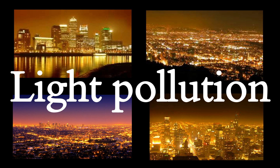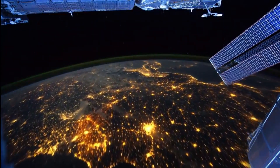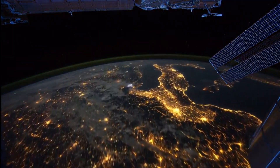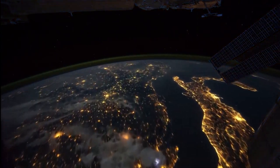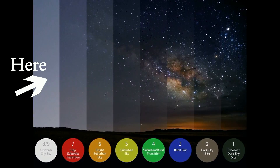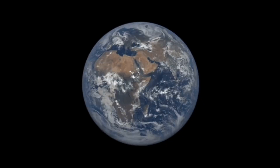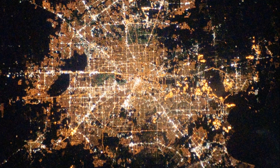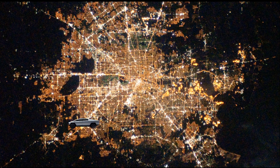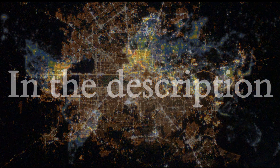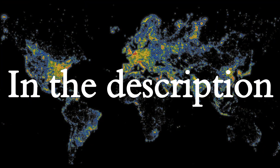Many beginners forget or even don't know about light pollution. Light pollution is the thing that is killing amateur astronomy. If you are observing in a very big city, you will see much less detail than in the countryside. To observe deep sky objects, it is better to go out of the city — not far away, just a few kilometers. In the description, I left a light pollution map where you can see where you have to go to see all the beauty of space.